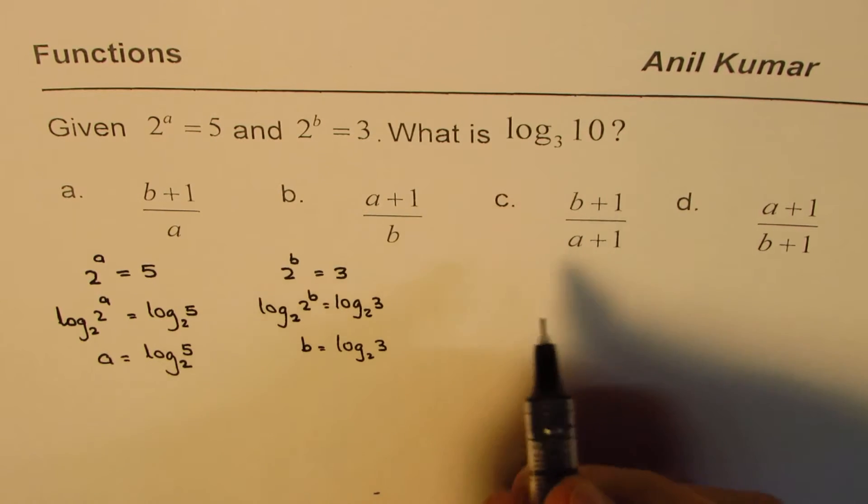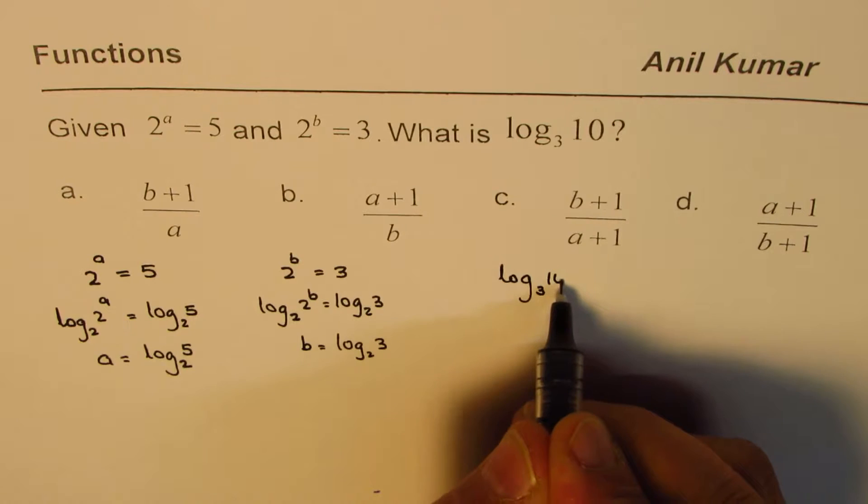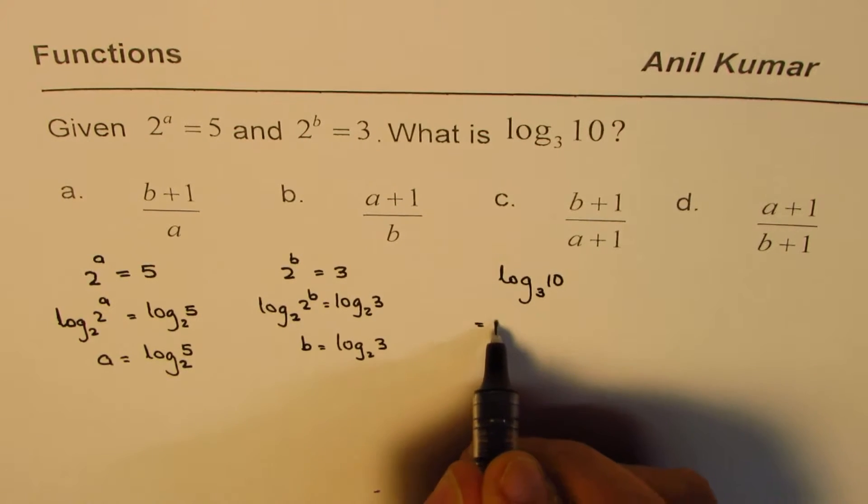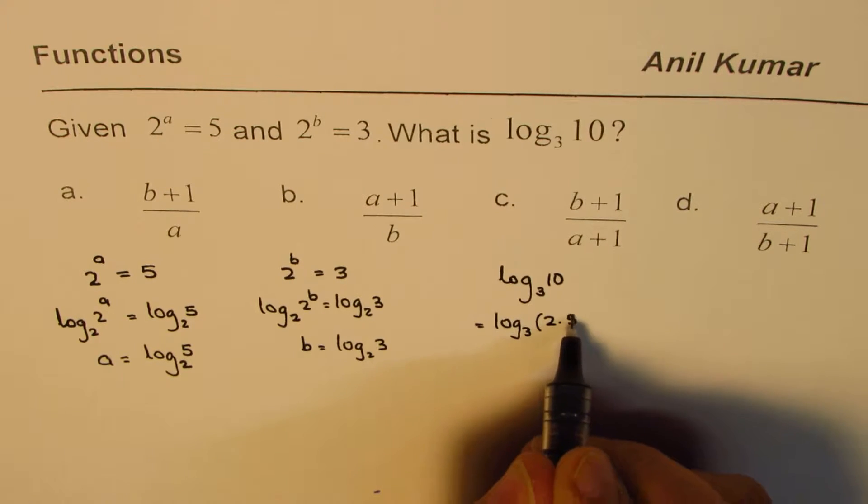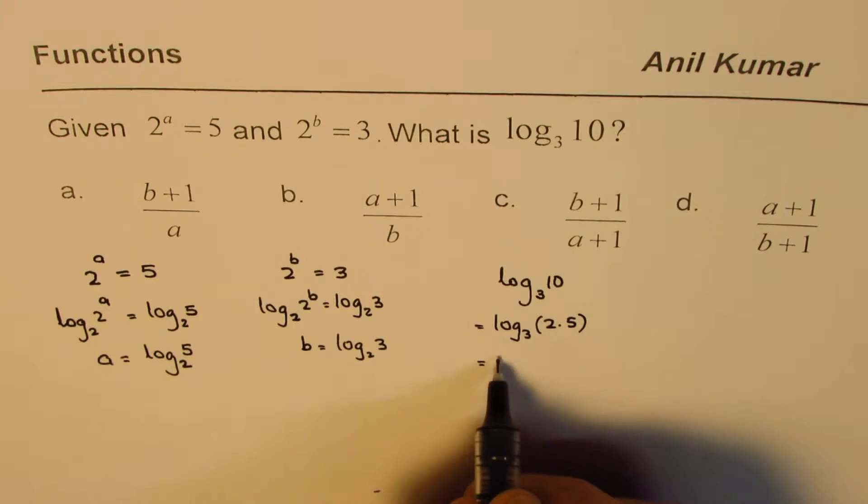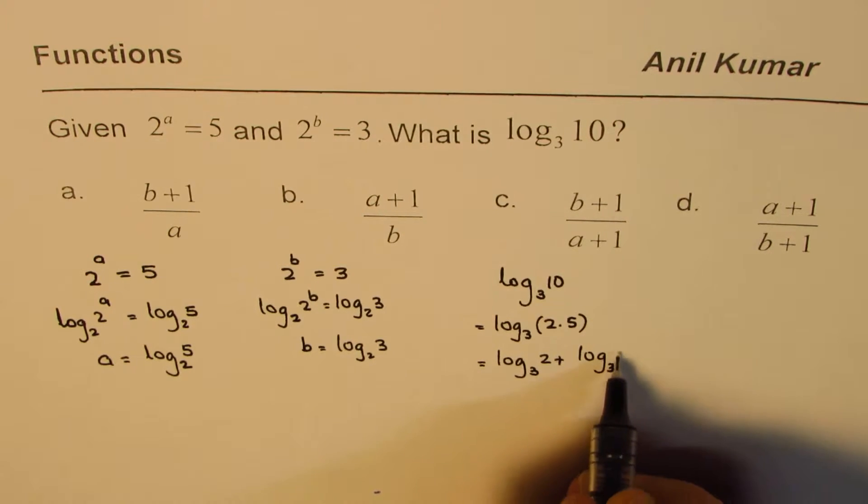What we really want to find is log to the base 3 of 10. Now that could be written as log to the base 3 of 2 times 5. Or I could write this as log to the base 3 of 2 plus log to the base 3 of 5.